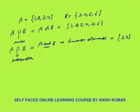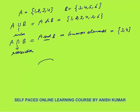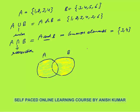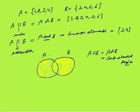Let me explain this with the help of a Venn diagram — that will make your concept more clear. Here, let me make circle A. This circle represents set A, and this other circle represents set B. When I say A union B, this means the complete shaded region. A union B means the complete shaded region.